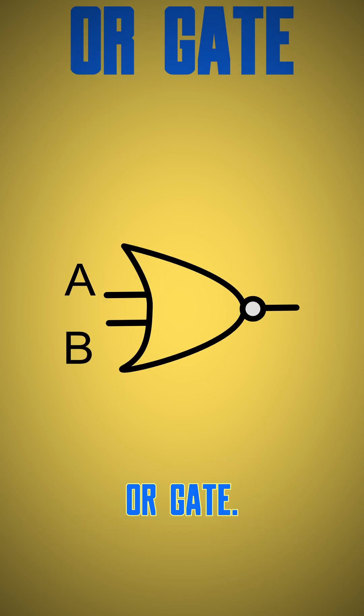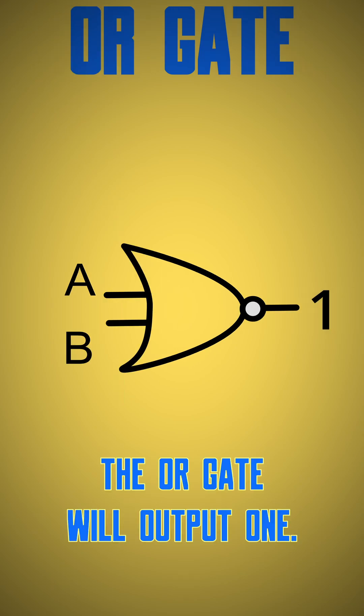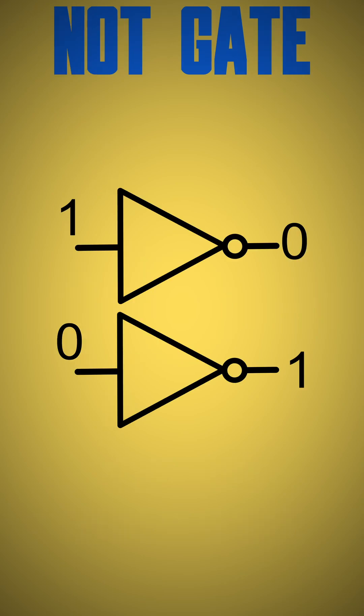OR gate: the OR gate will output one if at least one input is true.